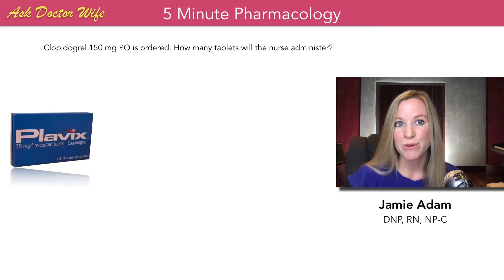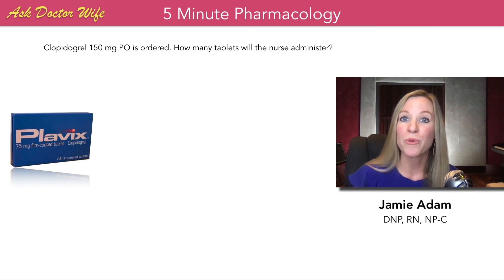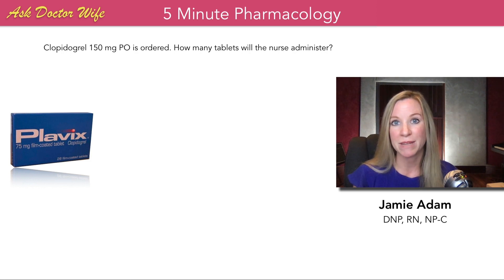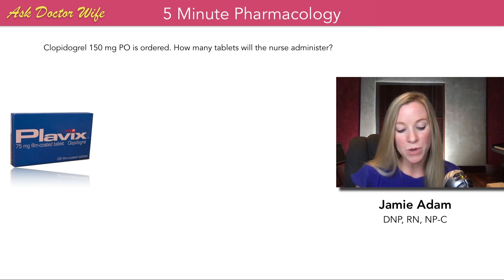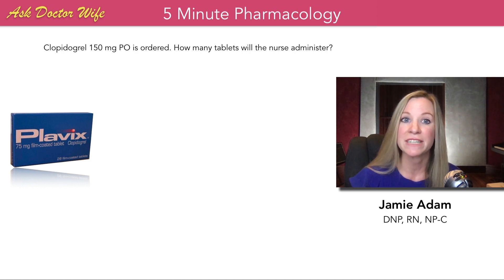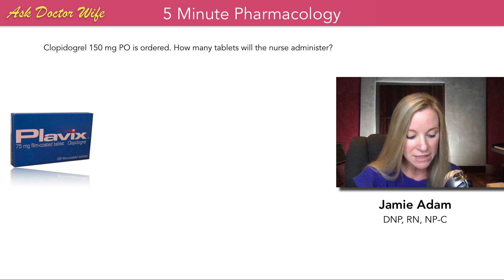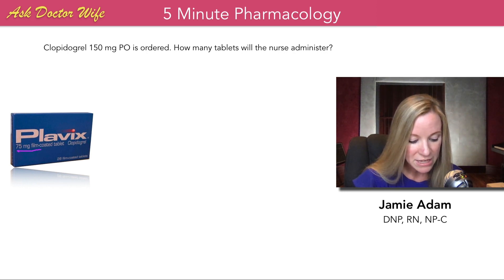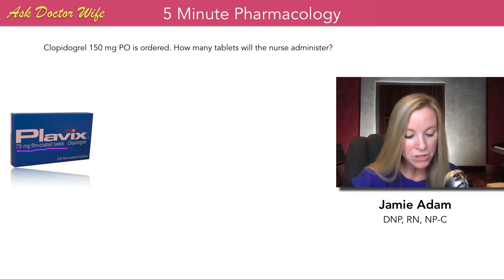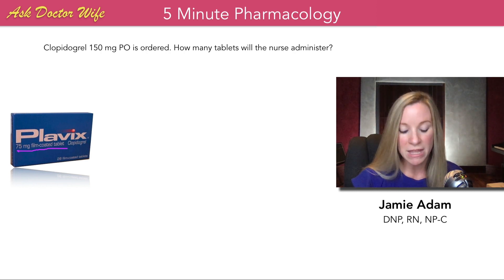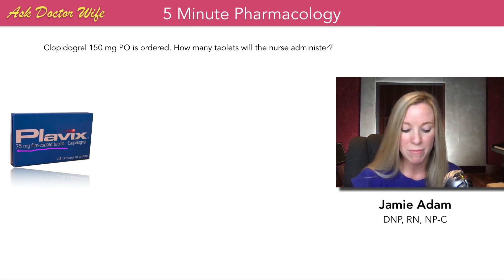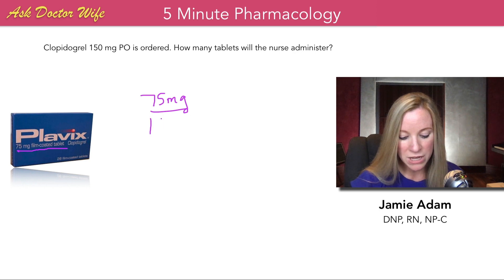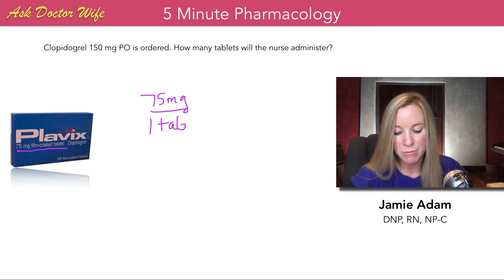Let's start with our first question. Clopidogrel 150 milligrams PO, or oral, is ordered. How many tablets will the nurse administer? First, I want you to pay attention to how Plavix or Clopidogrel comes. Looking at the label, we see that it comes in 75 milligram tablets. So using the ratio method, we put the information we know in ratio format: 75 milligrams is in one tablet.